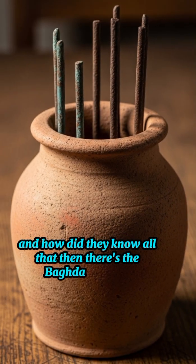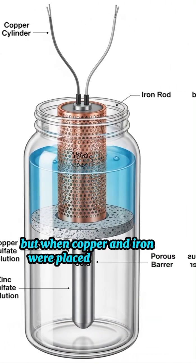Then there's the Baghdad battery. A simple clay jar. But when copper and iron were placed inside, and vinegar added, it produced electricity.